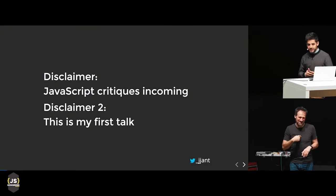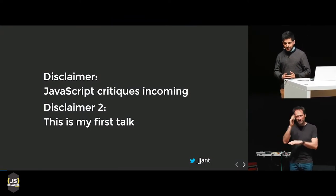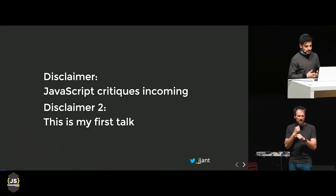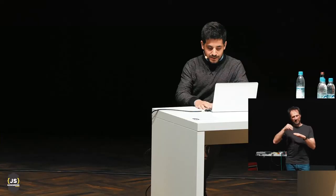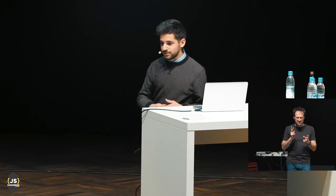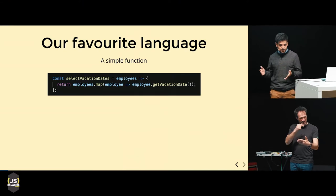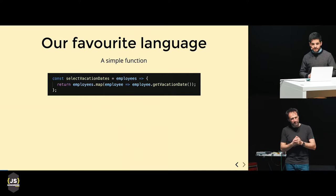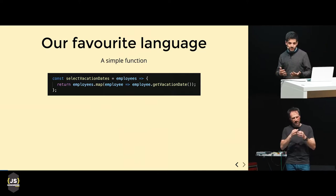My talk is going to begin with an anecdote about how I was writing a very simple function. I was working on a project for managing time off for employees. We basically had to display in some kind of table when employees were starting their vacations. So it came down to writing this simple function which would take a list of employees and get their starting vacation date for each one. And this worked great for a few days until someone made some changes I was not aware of.